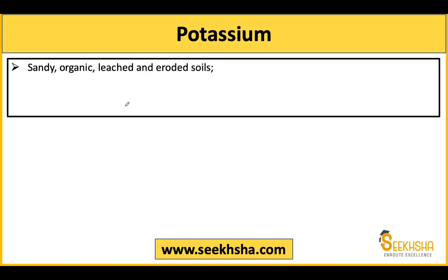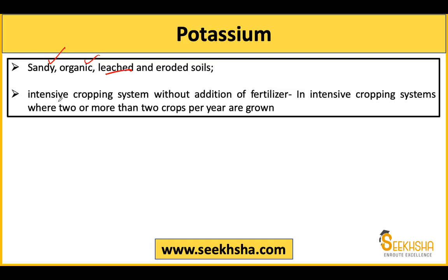Moving on to potassium deficiency. Potassium deficiency occurs in sandy soils, organic soils, re-leached soils, soils with leaching problems from heavy rainfall or heavy irrigation, soils with soil erosion problems, and soils under an intensive cropping system. Intensive cropping means growing more than two crops in a year continuously, using the land continuously. If you have an intensive cropping system but do not apply fertilizers, there will definitely be potassium deficiency in the soil.